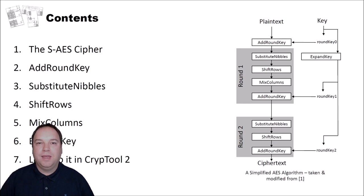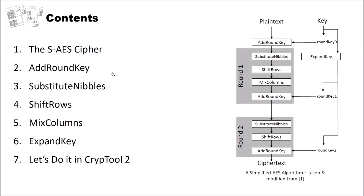I structured this video into seven different parts. In the first part we will have a look at an overview of the SAES cipher and its history. Then we will have a look at its four building blocks: Add Round Key, Substitute Nibbles, Shift Rows, and Mix Columns. As well as how the round keys of the cipher are generated. And finally we will do it in CrypTool 2, where we have a SAES implementation, and we will use it to encrypt and decrypt text.